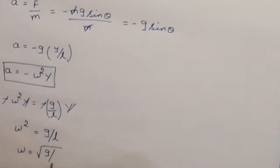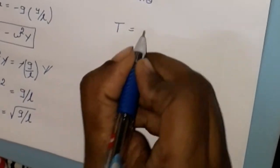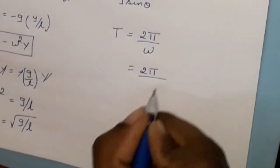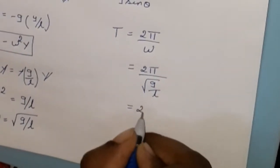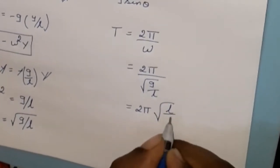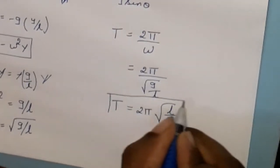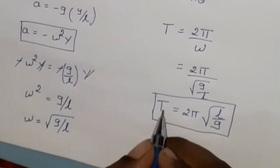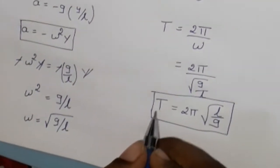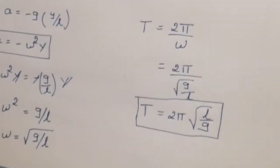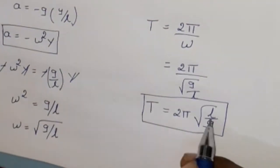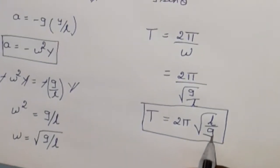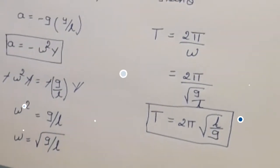According to the SHM formula a equals minus omega² y, substituting gives omega² equals g/L, so omega equals root over g/L. The time period T equals 2 pi by omega, which gives T equals 2 pi root over L/g. This time period does not depend on the mass, size, or shape of the bob. T is directly proportional to the square root of the length of the pendulum and inversely proportional to the acceleration due to gravity. These are the laws of the simple pendulum.